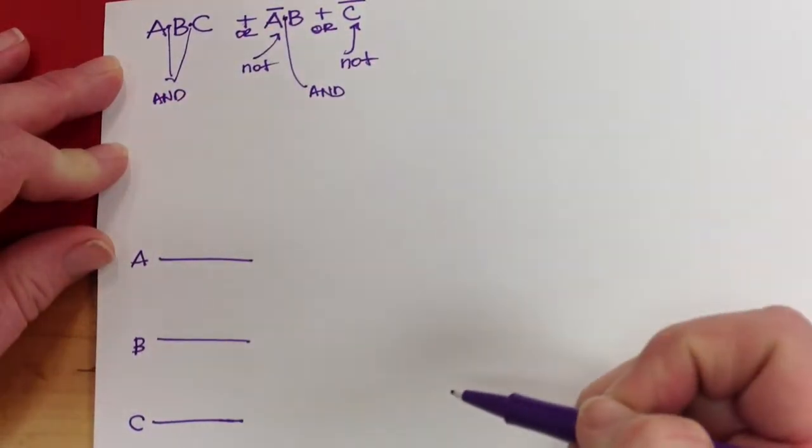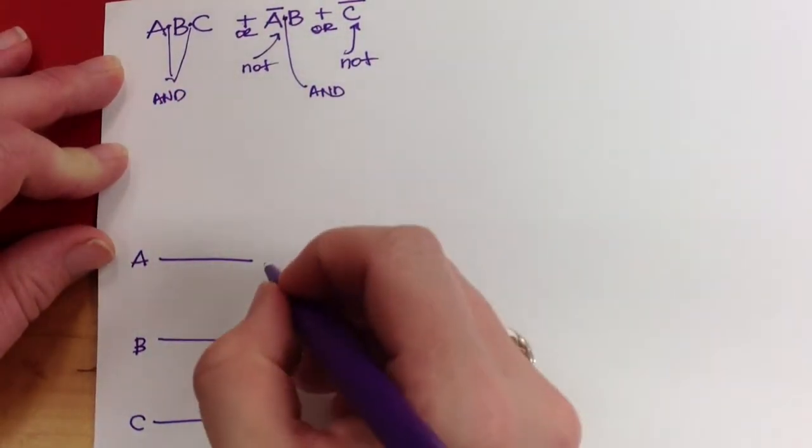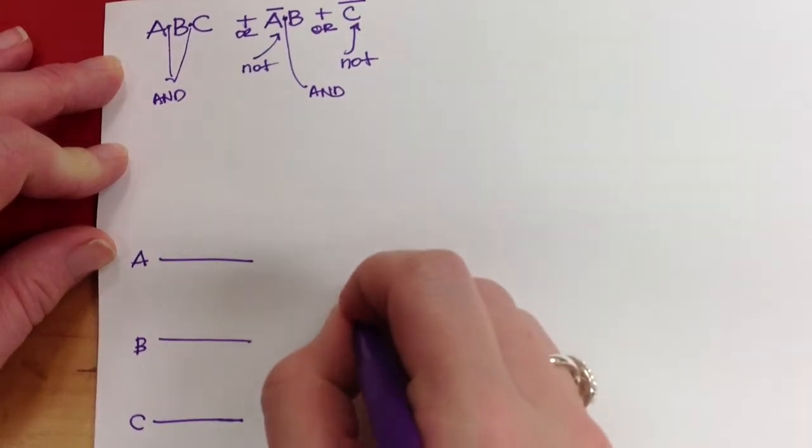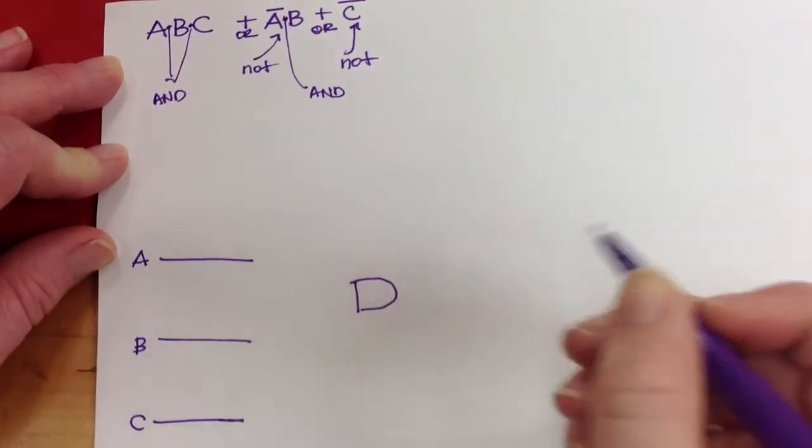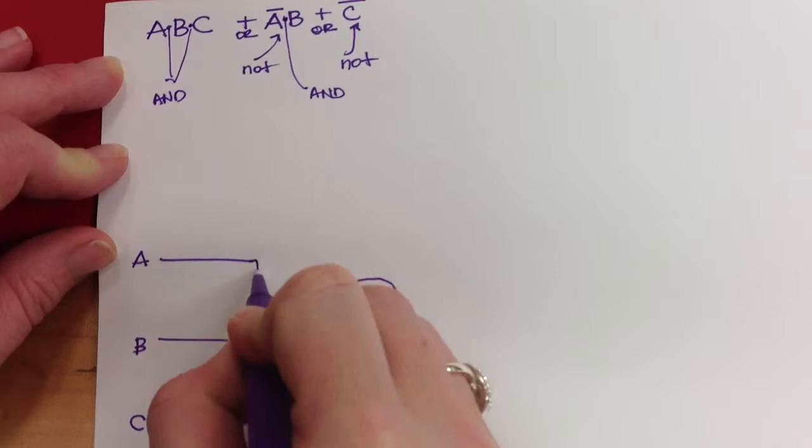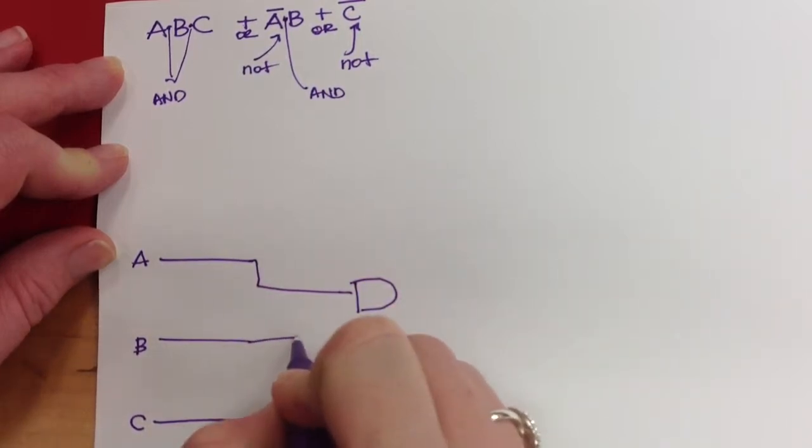So the first thing I get to is I have A and B and C, and so far we're just using two input AND gates, so I'm going to draw two input AND gate and bring in A and B.